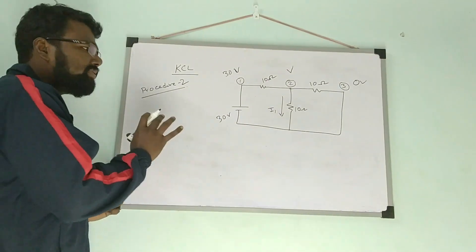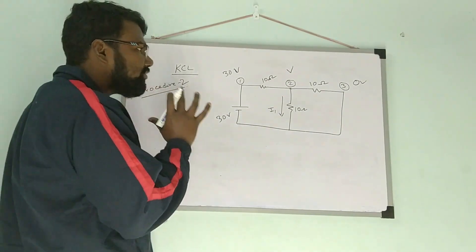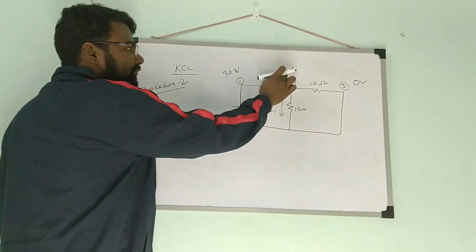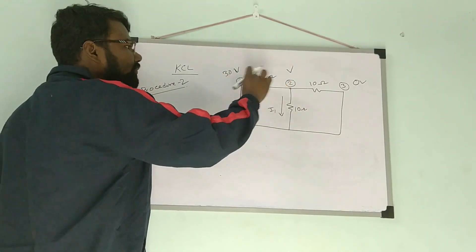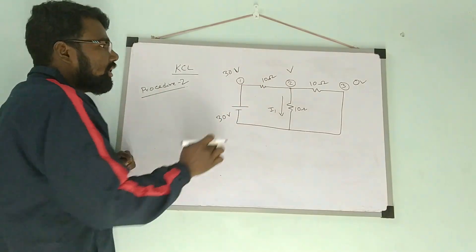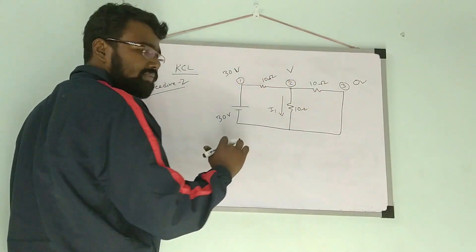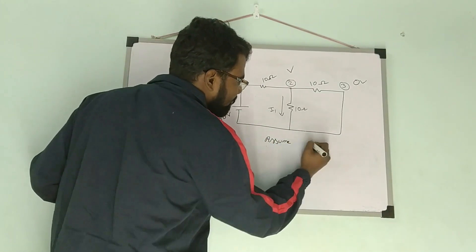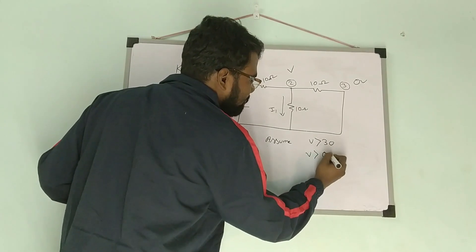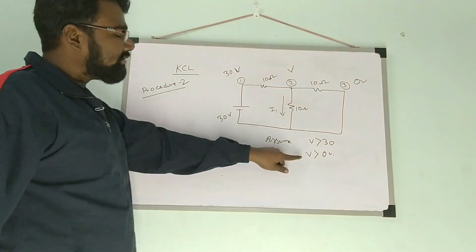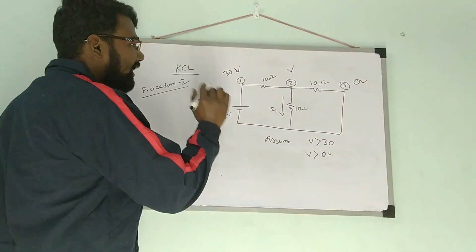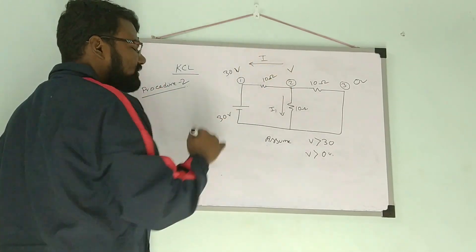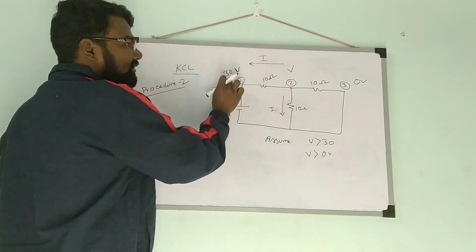In Procedure 2, we assume that the voltage at node 2 — this is V — is greater than all of the other node voltages. So V is greater than 30 volts and V is greater than 0 volts. If we consider this, then the current in the branch connected to node 1 flows outward from node 2, because V is greater than 30 volts.